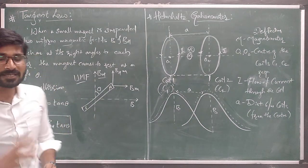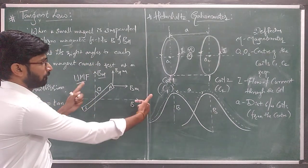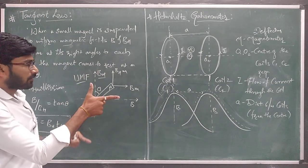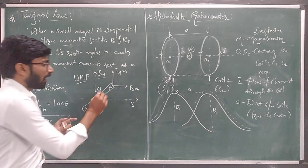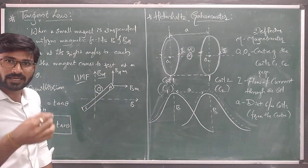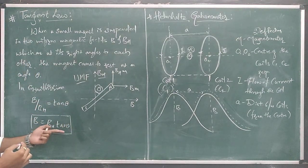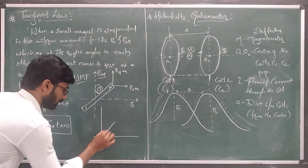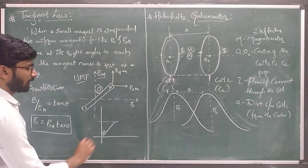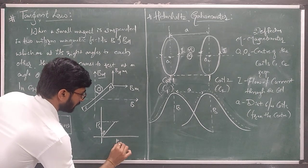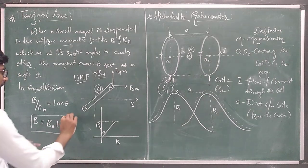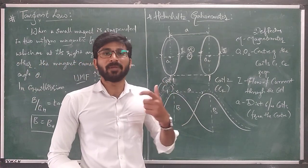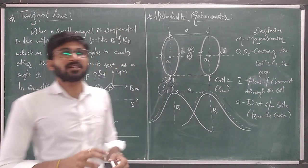To state the tangent law: when a small magnet is suspended in two uniform magnetic fields B and Bh which are at right angles to each other, and the magnet comes to rest at angle theta, then B equals Bh·tan theta. This expression gives the meaning of the tangent law. By using this tangent law we are going to explain and describe the Helmholtz galvanometer.